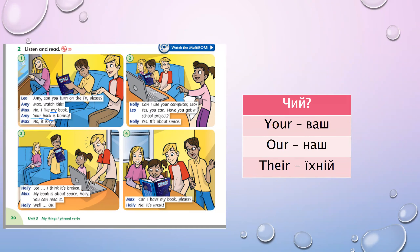'No, it isn't. Your book is boring.' Picture two: 'Can I use your computer, Leo?' — your computer — we underline 'your computer'. 'Yes, you can. Have you got a school project? Yes, it's about space.' Leo: 'I think it's broken. My book is about space, Holly.' Where is the pronoun? 'My' — my book is about space.